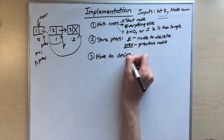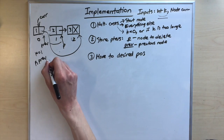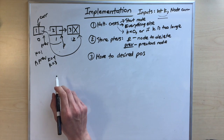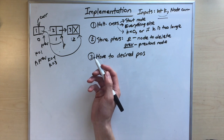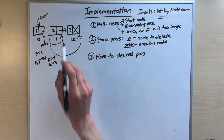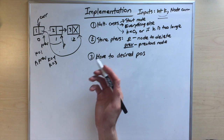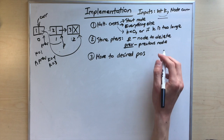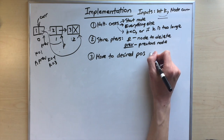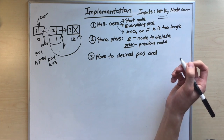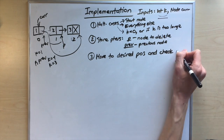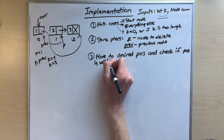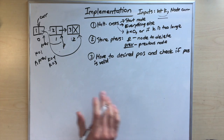There's a catch: if k equals negative one or k equals three, k would never reach zero. We'd reach the end of the linked list before k becomes zero. So when we stop moving, we also need to check if the position is valid.